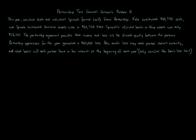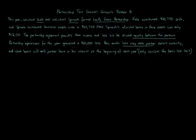We're focusing on the amount of loss that each partner can deduct. We've got two partners — individual Kale and individual Spinach — who own this Leafy Green Partnership as equal partners. When doing loss limits, there are many to consider: the basis loss limit, Code Section 465 at-risk rules, Section 469 passive activity loss rules, and a few others. The only one we need to consider for this problem is the basis loss limit.